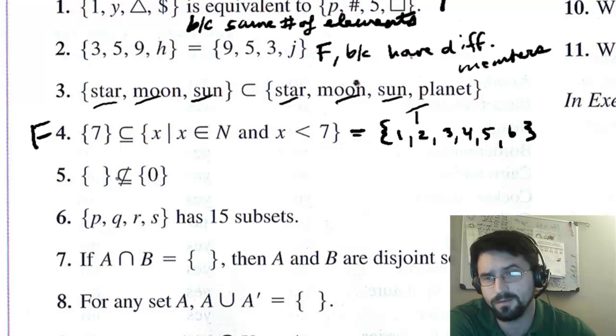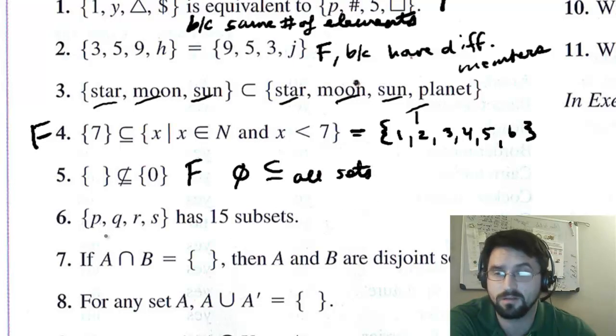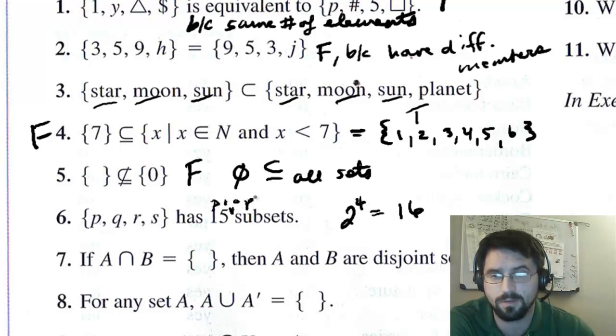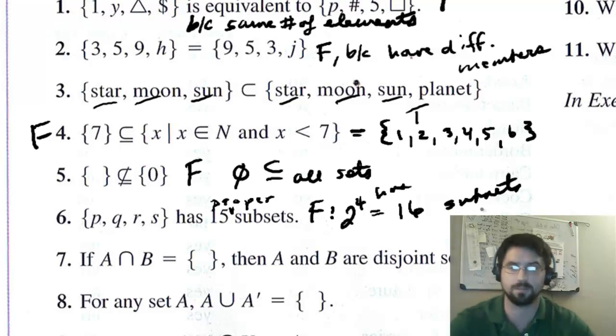Down here, we have the empty set is not a subset of the set containing 0, but this is false, because the empty set is a subset of all sets. Okay. The next question is, {p, q, r, s}. The set containing these 4 elements has 15 subsets, and the answer is that's false, because if there are 4 elements, there are 2 to the 4th, 16 subsets. If the word proper was in here, then that would have been true. But it's not in there, so the answer is false. Why? Because it has 16 subsets.